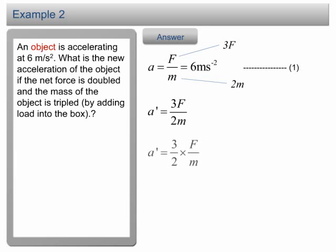We can write this as 3 over 2 multiplied by F over m. From equation 1, we know that F over m is equal to 6. Therefore, the new acceleration is 9 m per second square.